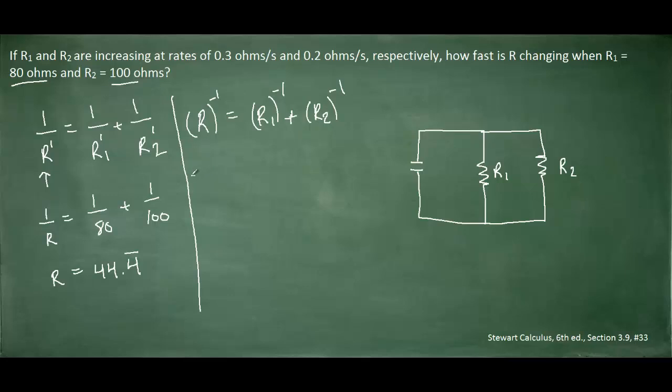We pull the power down in front, we recopy the inside, subtract 1 from the exponent, and then multiply by the derivative of the inside, which as noted was dr/dt. Proceeding in a similar way produces the following results.